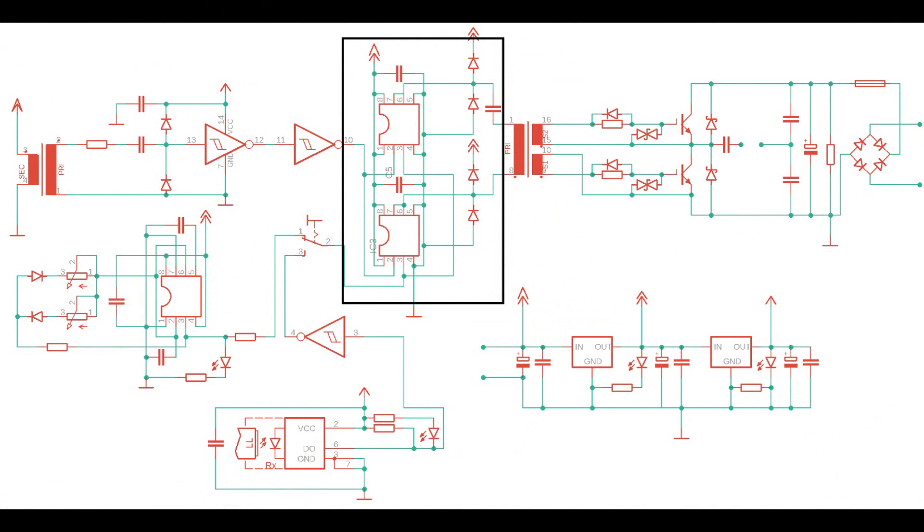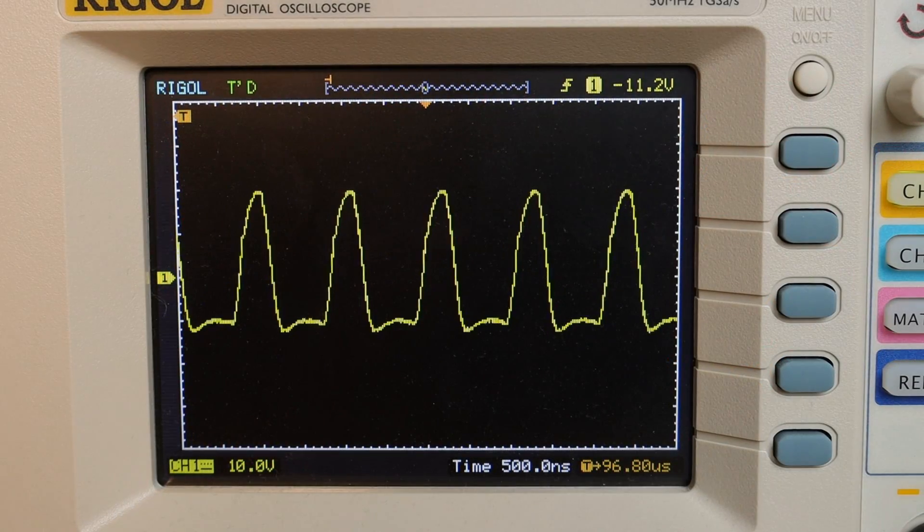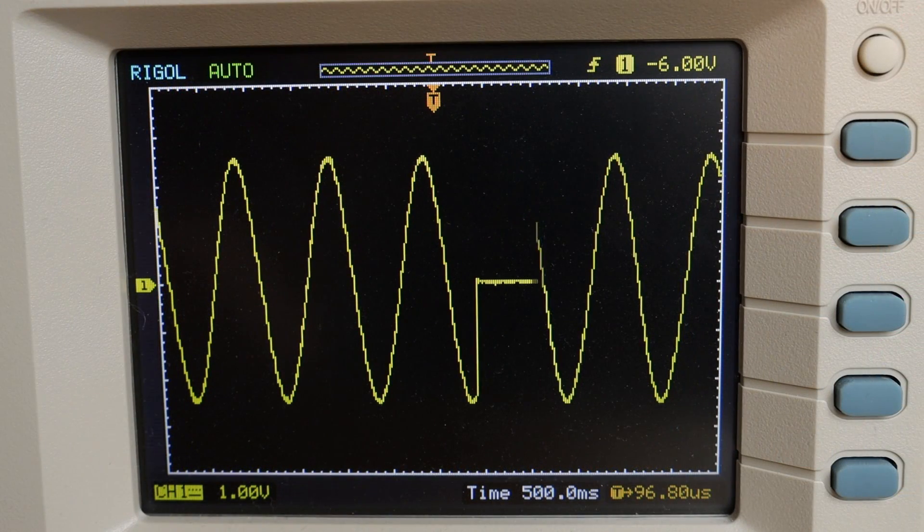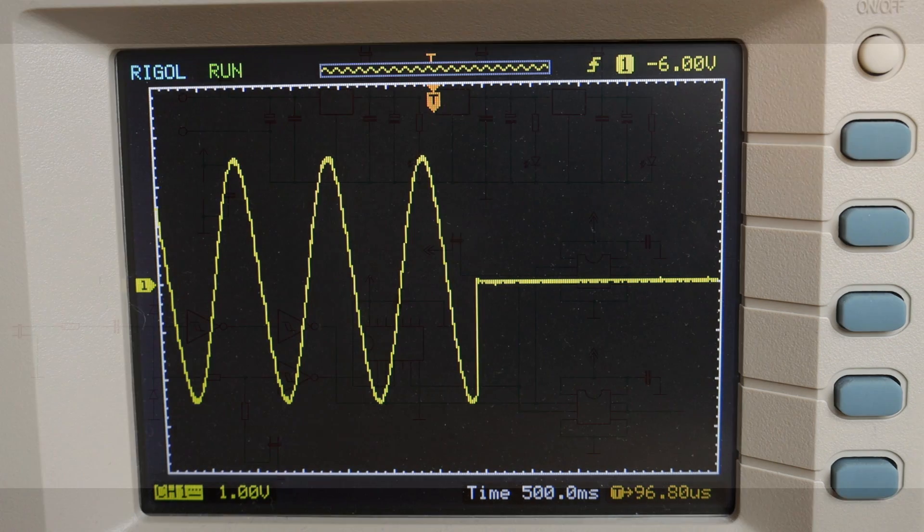The problem is that the GDT driver needs more power for a full bridge. Otherwise the gate signal would look not so good. That means that the IGBTs will die faster. So we need a more powerful GDT driver. For this we don't have to change much of the circuit, we just have to add a little bit.